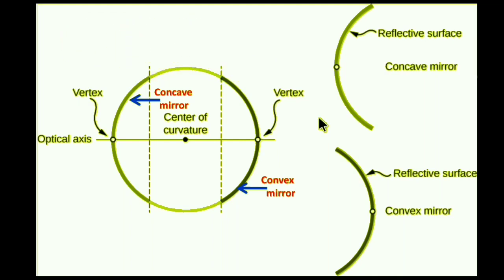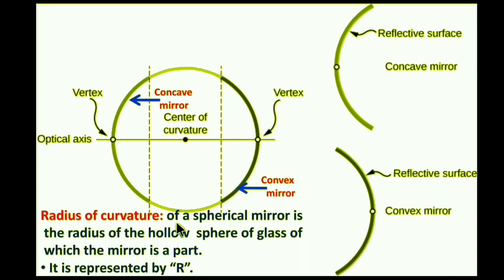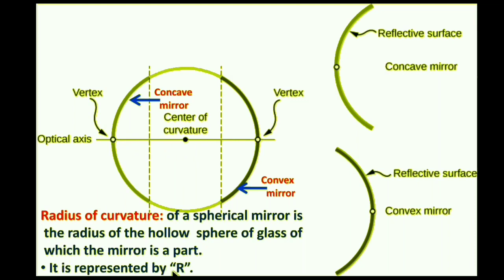The next term is radius of curvature. The radius of curvature of a spherical mirror is the radius of the hollow sphere of glass of which the mirror is a part. It is represented by R. The center of curvature C and the radius of curvature R are related — they correspond to the same hollow sphere.